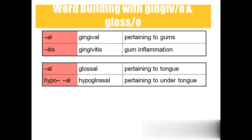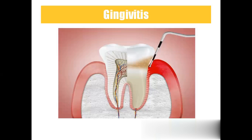Gingival means pertaining to the gums; gingivitis is gum inflammation. Glossal means pertaining to the tongue; hypoglossal means under or below the tongue. Gingivitis is inflammation of the gums.